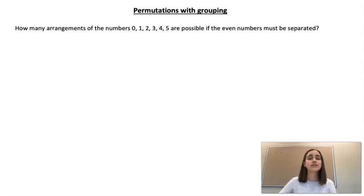So our last example is a little bit different. It says how many arrangements of the numbers 0, 1, 2, 3, 4, 5 are possible if the even numbers must be separated. So just to clarify, 0 is an even number, so our only even numbers are our 2 and our 4.